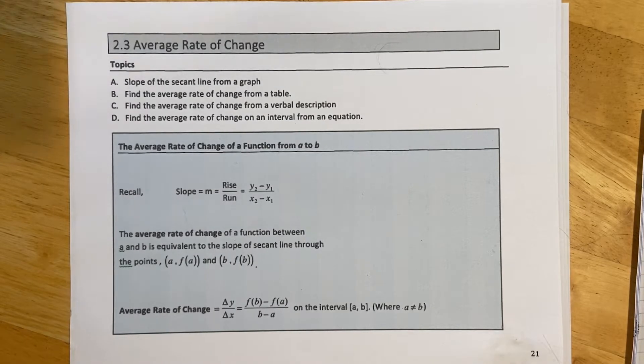Hey everyone, this is Derek, and this is section 2.3. It's going to be about average rate of change. And this is going to tie in directly with what we just did in 2.1, which was slope of the line.